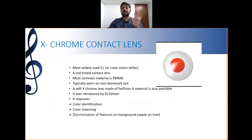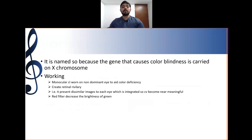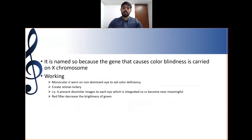X-Chrome is named so because the gene that causes color blindness is carried on the X chromosome — it is an X-linked disorder. The working principle involves monocular contact lenses worn on the non-dominant eye to aid color deficiency. They create retinal rivalry — presenting dissimilar images to each eye which are then integrated. The red filter decreases the brightness of green wavelengths entering that eye.